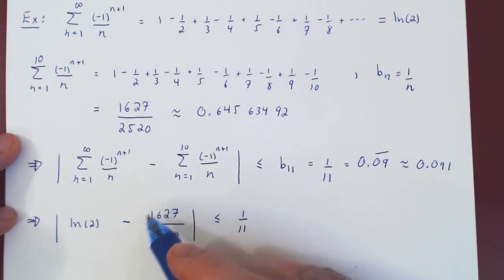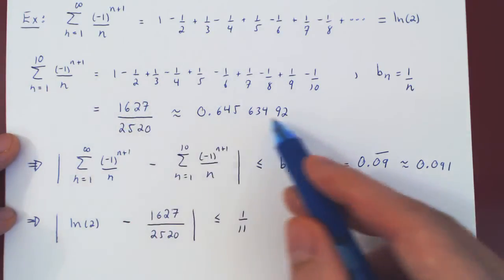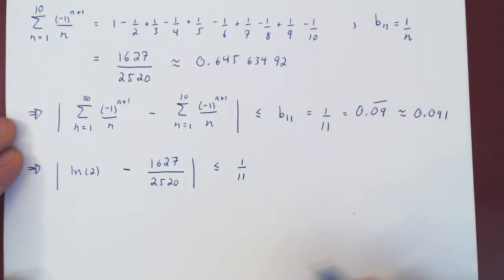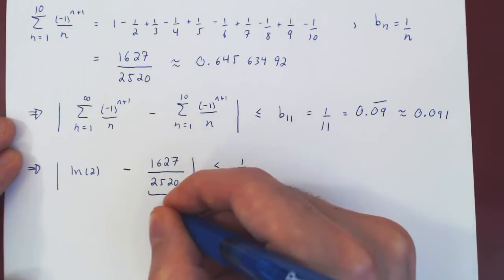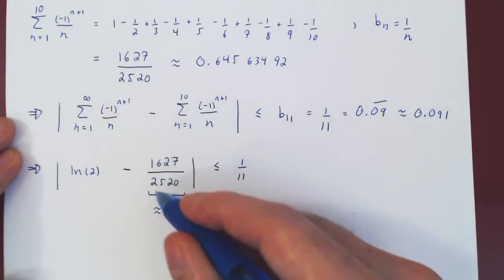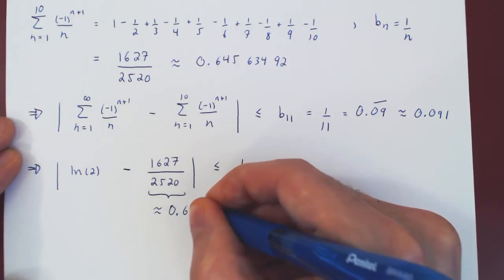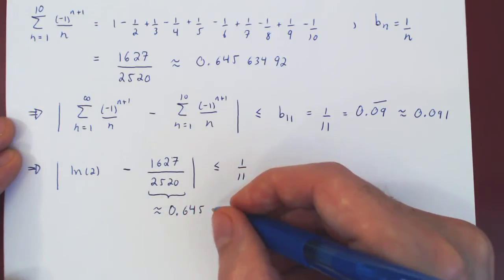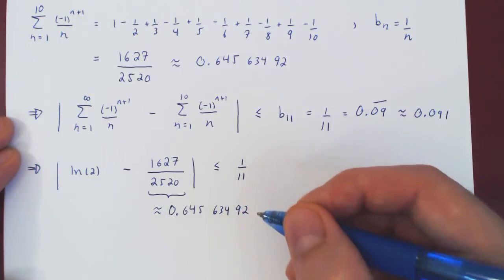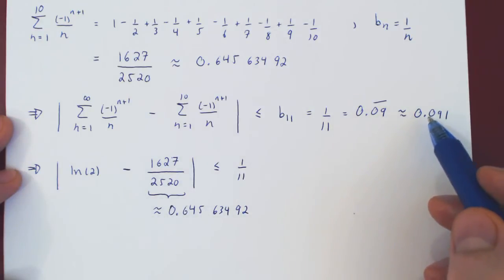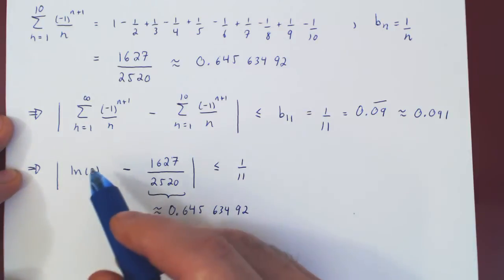And now let's compare the decimal expansion that your calculator returns in this case. And then if you punch in your calculator ln of 2, we'll look at the decimal expansion of that as well to see if indeed this looks legitimate. So as we have said before, if you ask your calculator to return the decimal expansion of this rational number, you get approximately this. So 0.64563492. And now we're seeing that the difference between this fraction and ln of 2 is at most 1 over 11. You can think of it as roughly 0.1. So this should be pretty close to ln of 2.